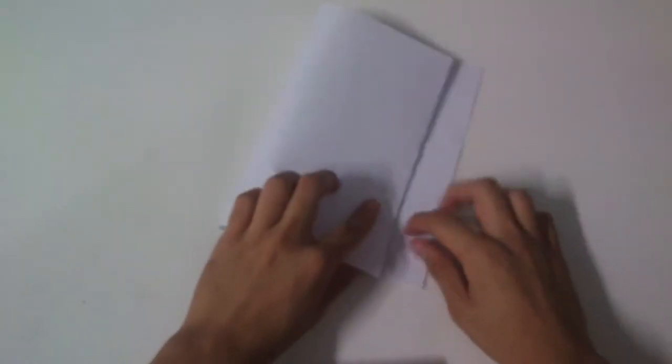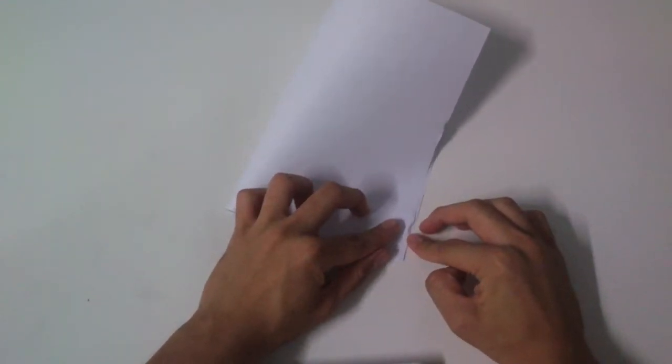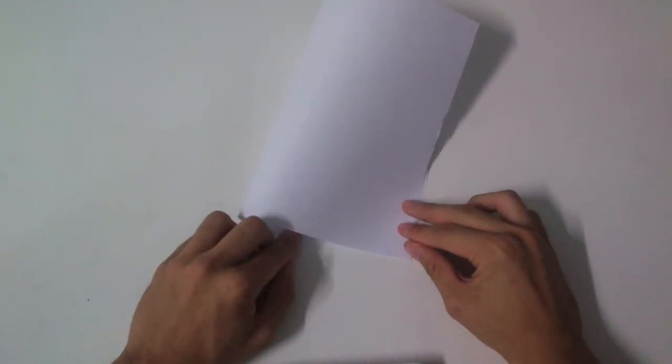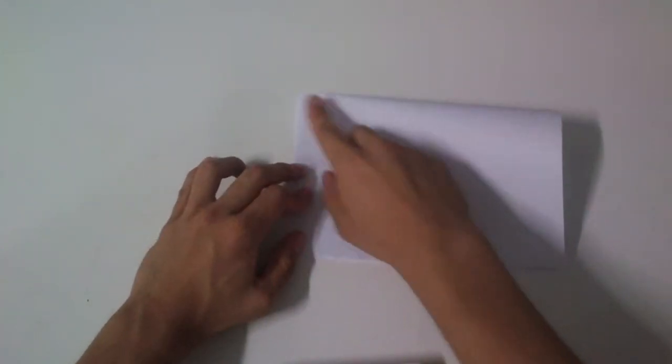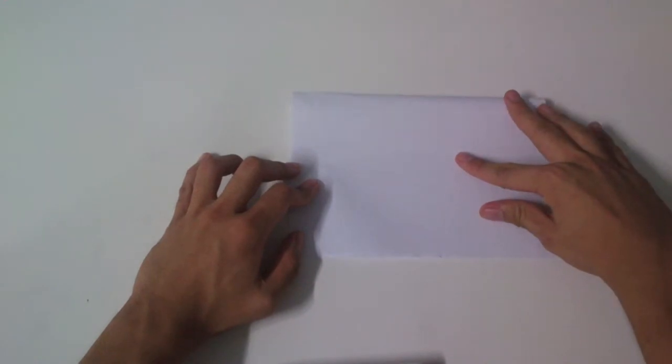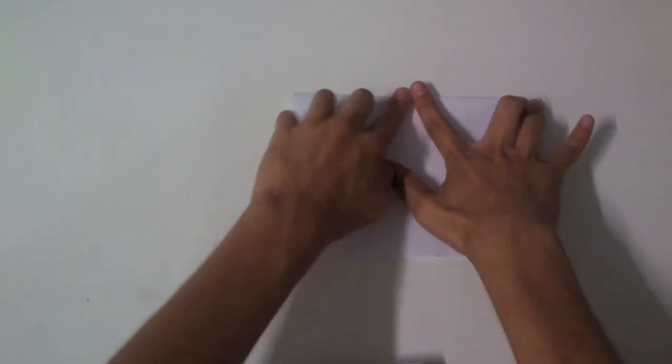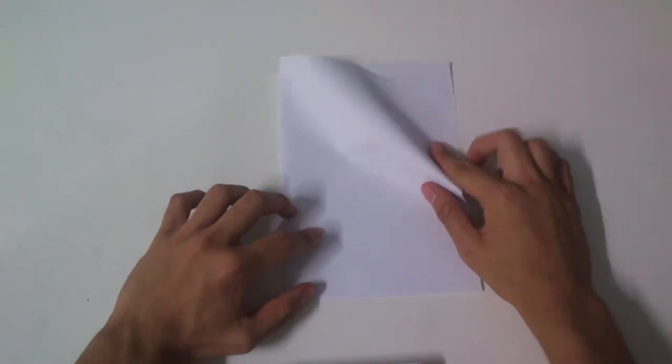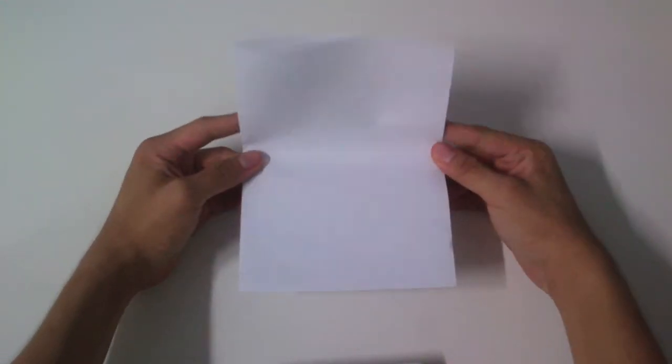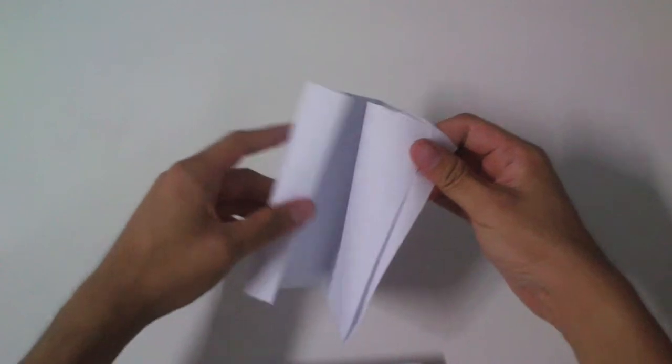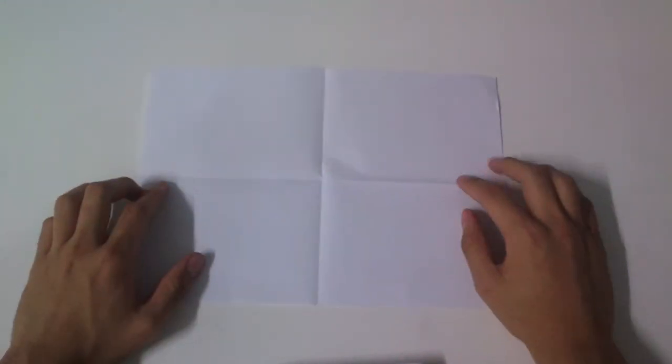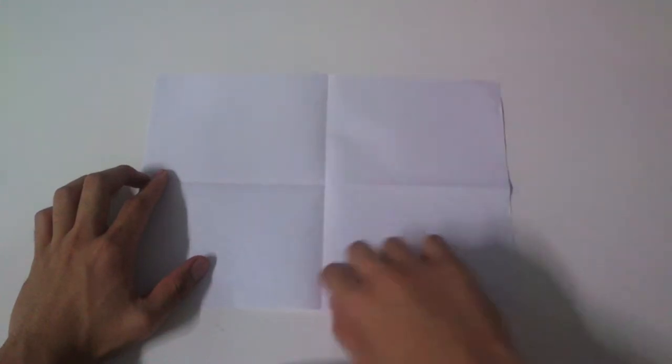So here's how. First you need to crease two lines to the center, one is horizontal and one is vertical. When you finish it you will get two lines like this, one is horizontal and one is vertical.